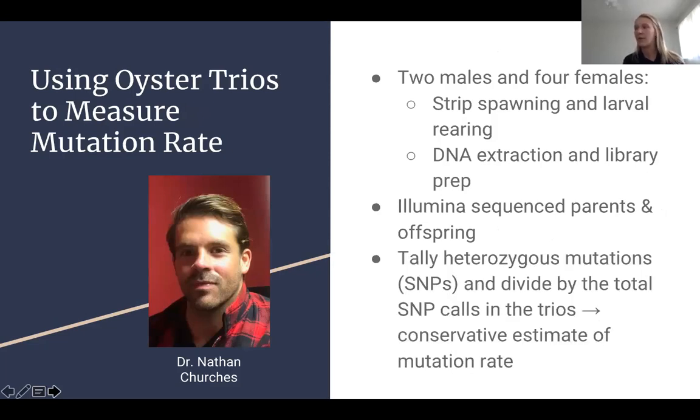Through some bioinformatics work, he was able to tally the number of heterozygous mutations, in this case single nucleotide polymorphisms or SNPs, and then you can divide it by the total number of SNPs in these trios. Trios are two parents and their offspring. You can use those numbers to estimate the mutation rate. It's important to note here that this is actually a really conservative estimate of mutation rate because you're only looking for heterozygous mutations, not looking for homozygous mutations or any other sort of mutations that may have happened throughout this F1 generation.